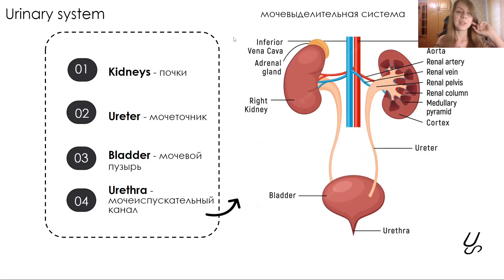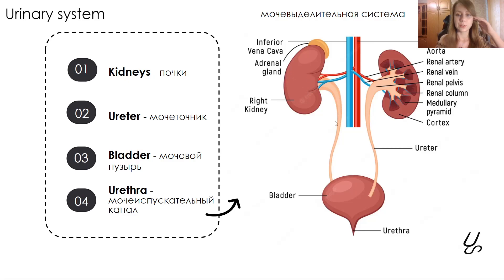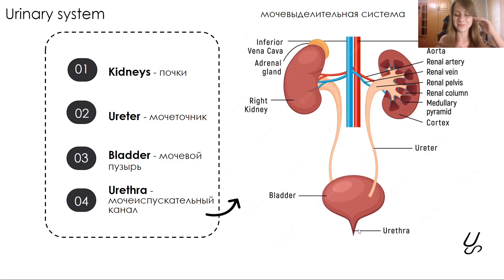Urinary system. The urinary system consists of organs such as the kidneys, where urine is produced. Then urine goes through the ureter to the bladder, and from the bladder it exits through the urethra.